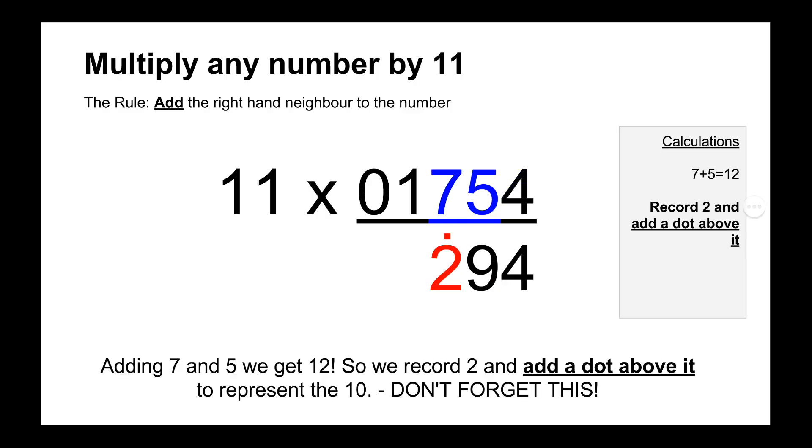Now here we have to do 7 plus 5 which gives our answer 12, so instead of writing down 12 we put a dot above the 2. So effectively we record the last digit in our double digit answer which is 2, and we add a dot above it to represent the carry 10.